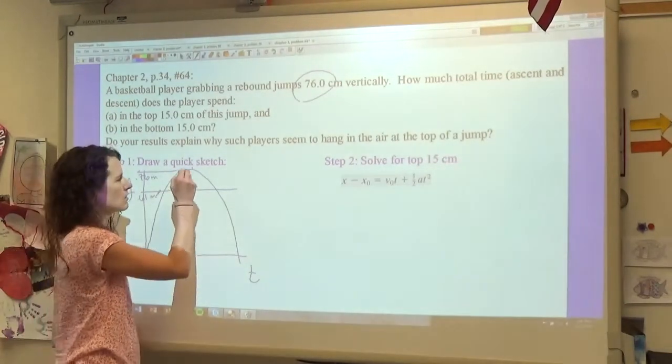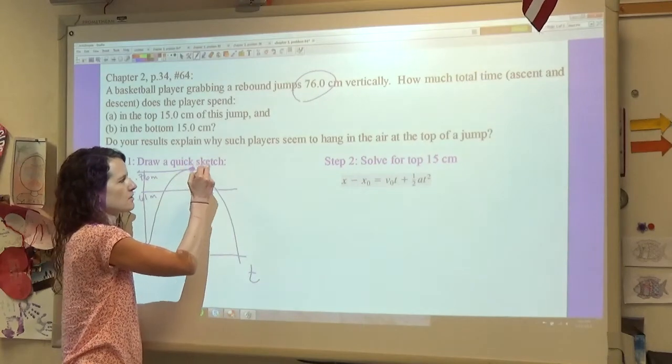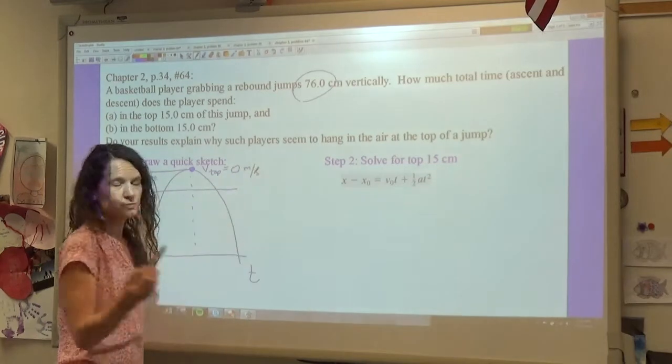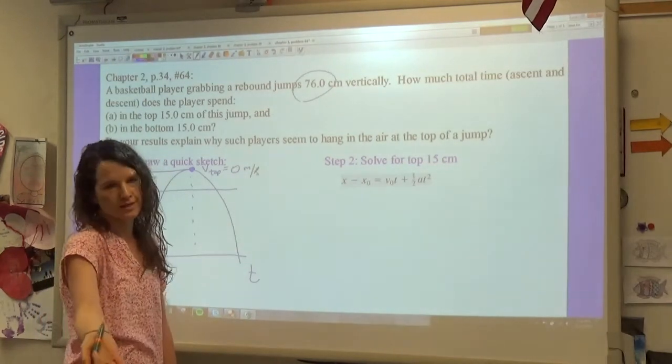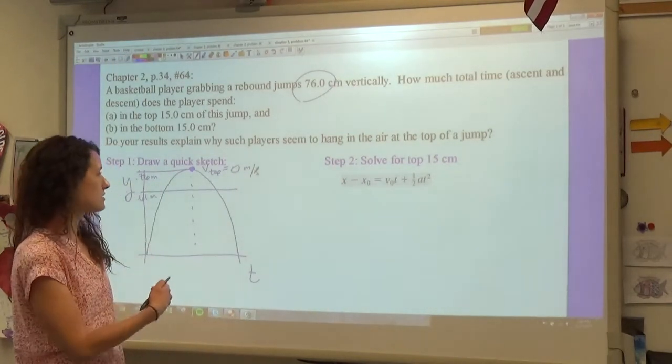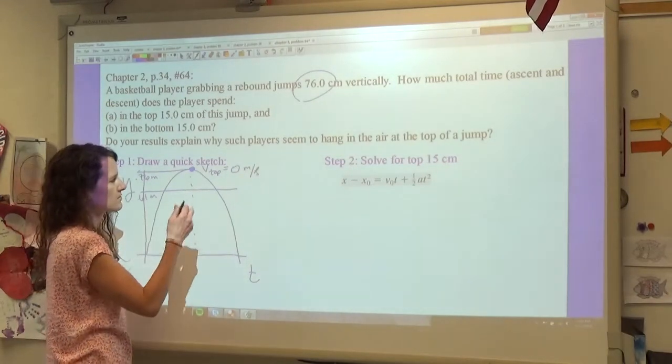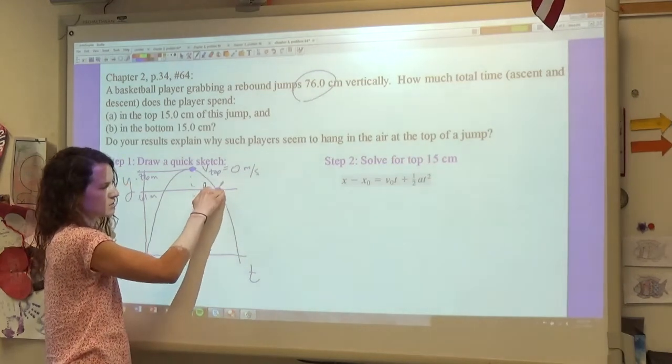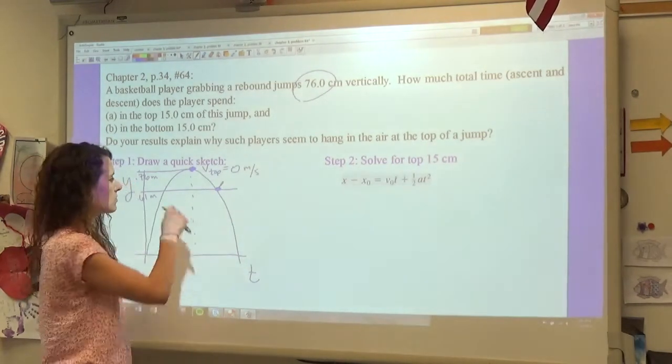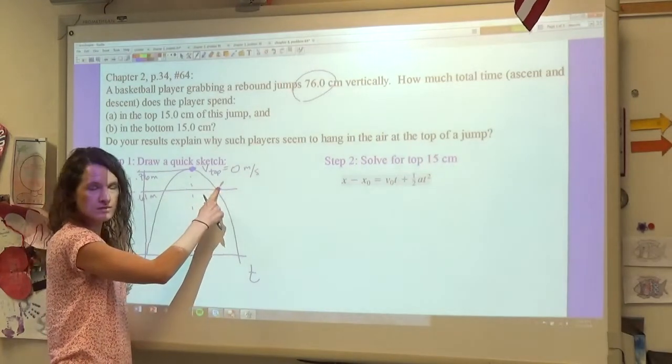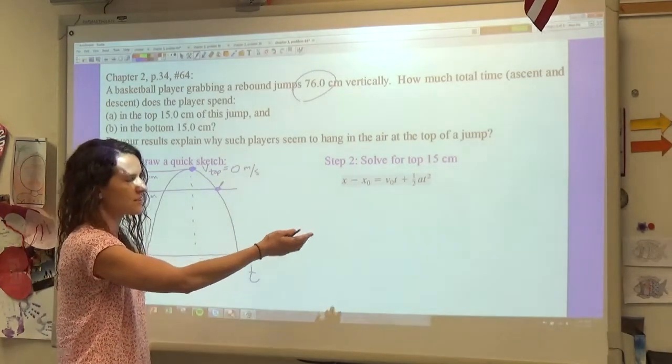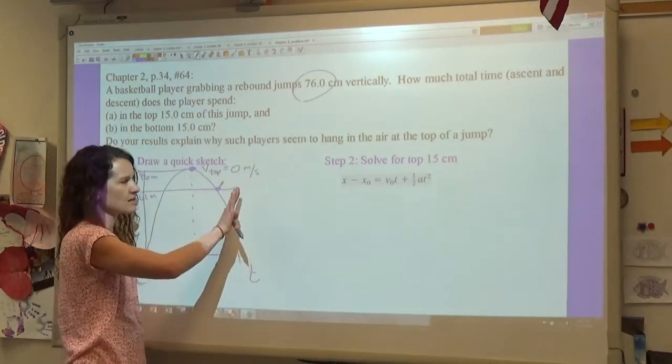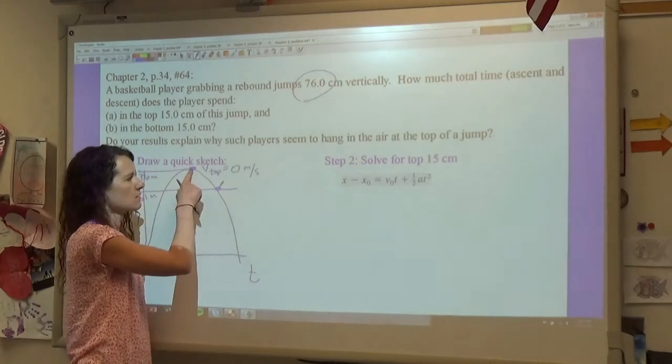What I want to do—I happen to know the velocity at the very top. The velocity at the top is going to equal zero meters per second because we come to a stop as we change directions. So what I want to do is I want to solve for the amount of time that it's going to take to go from the top to 0.61 meters right here. The reason why I do that is because I don't know the velocity here and I don't know the velocity here, but I have an equation that just has initial velocity.